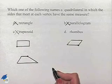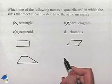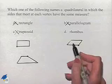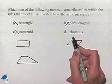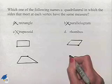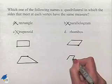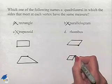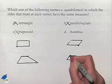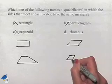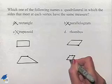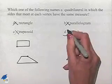So the trapezoid would not have to be that particular quadrilateral. By a process of elimination, we can decide the answer must be rhombus. But let's also just recall that a rhombus is a parallelogram in which all four sides have the same measure. So at any particular vertex, we're going to have sides that meet that have the same measure. So our answer is D.